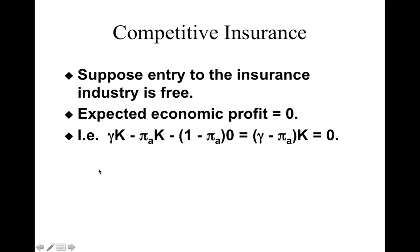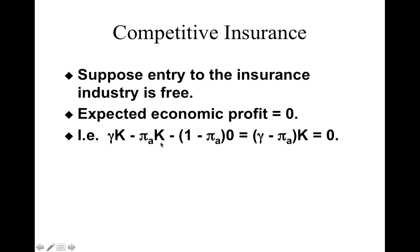So we look at the profit equation and equate it to zero to figure out the level of insurance demanded. Here, γ is the price of a dollar of insurance, k is the total insurance bought, and minus k would be the insurance payout with the probability of an accident. With the probability of no accident, no amount is paid out. This gives us the revenue of the firm selling competitive insurance. The payout in case of an accident, and zero payout in case of no accident.